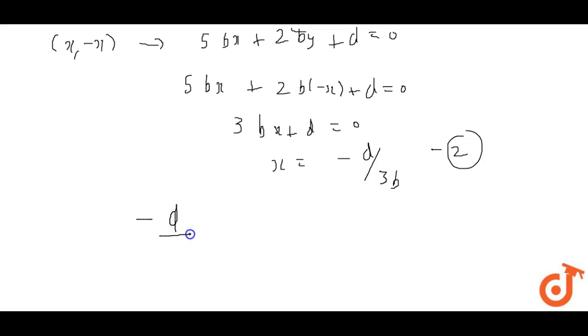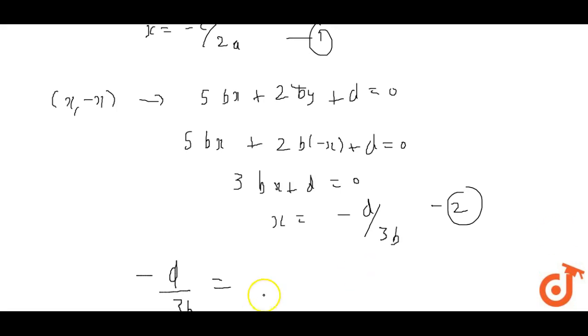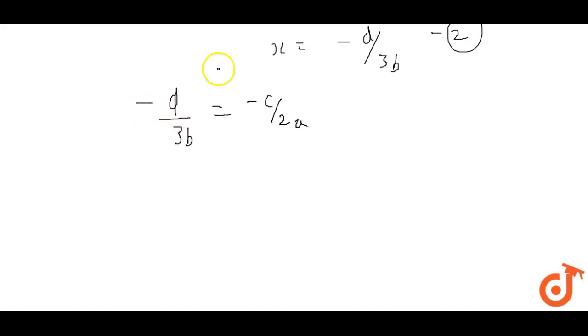So we get minus d by 3b equals to minus c by 2a. The minus signs cancel out. Cross multiplying, we get 3bc equals to 2ad, so 3bc minus 2ad equals to 0.